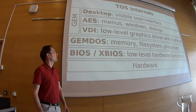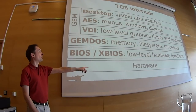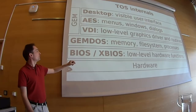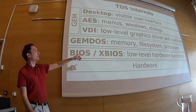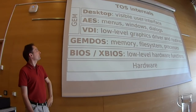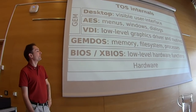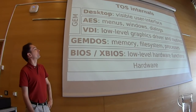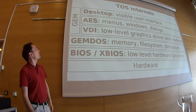About the internals: basically, you have the hardware. Then on top, you have the BIOS for low-level input/output; GEMDOS, which handled memory, file systems, processes; VDI for low-level graphics and more; AES for menus, windows, dialogues; and the desktop for user interface. The three upper layers are called GEM.